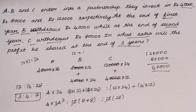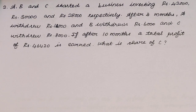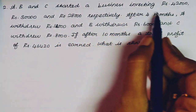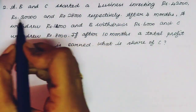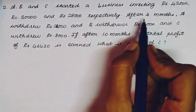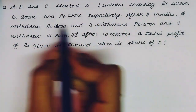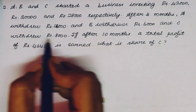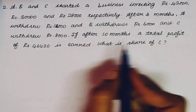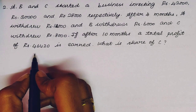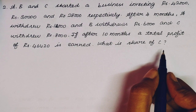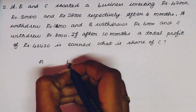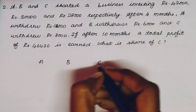Second question: A, B and C started a business investing Rs. 42,000, Rs. 30,000 and Rs. 28,000 respectively. After 4 months, A withdrew Rs. 12,000, B withdrew Rs. 6,000 and C withdrew Rs. 8,000. If after 10 months a total profit of Rs. 46,420 is earned, what is the share of C?